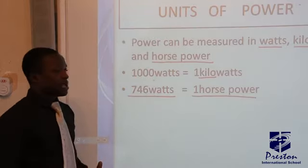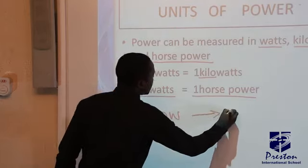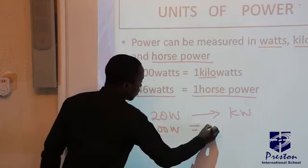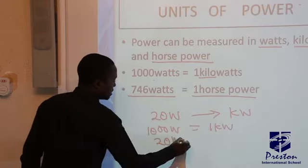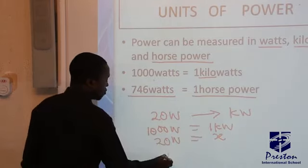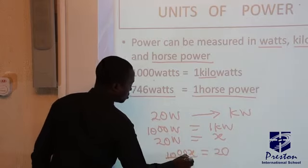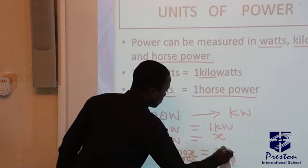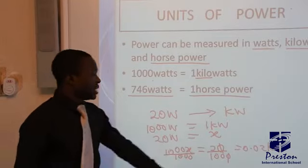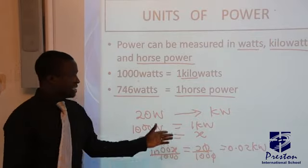So if you want to make a unit conversion — for example, let's say you are converting 20 watts and you want to change it to kilowatts — you recall that 1,000 watts equals 1 kilowatt. So, 20 watts gives you an unknown value. By cross-multiplying, you have 1,000 times the unknown equals 20 times 1, which is 20. Divide by 1,000 and you get 0.02 kilowatts. You can also change watts to horsepower by following the same principle, where 746 watts equals 1 horsepower.